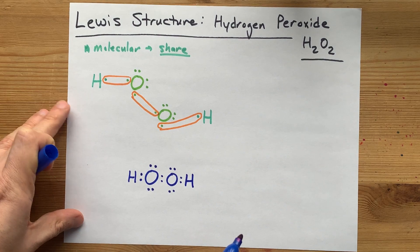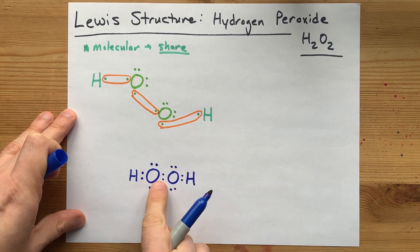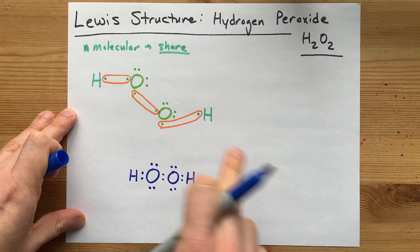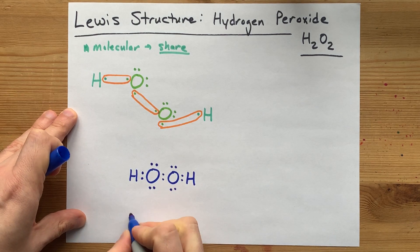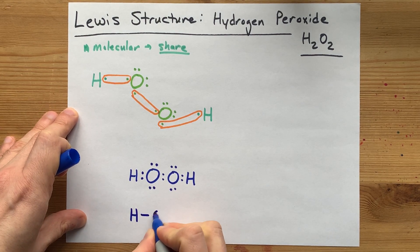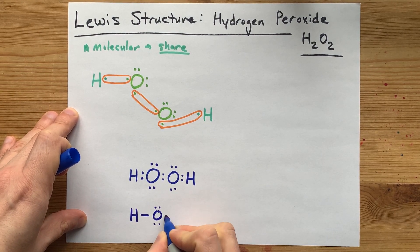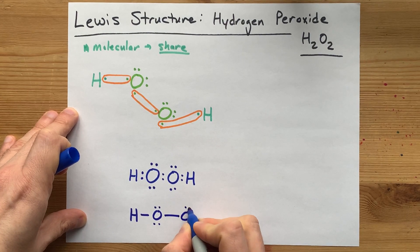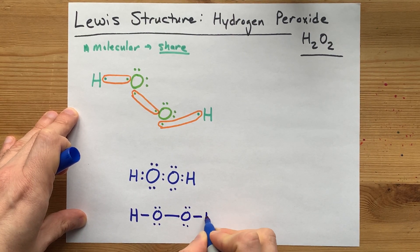This counts as a good Lewis structure, although I prefer it when single and double and triple bonds are represented with horizontal lines. H, O, single bond, O, single bond, H.